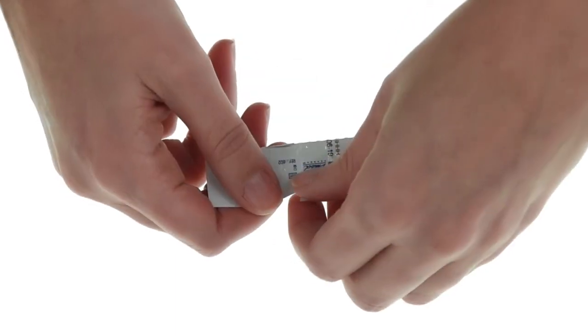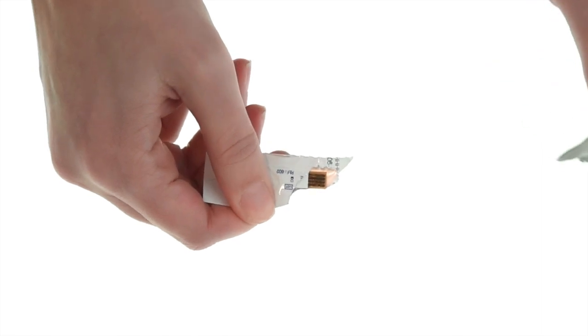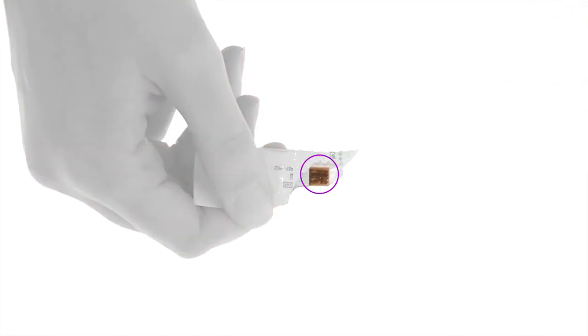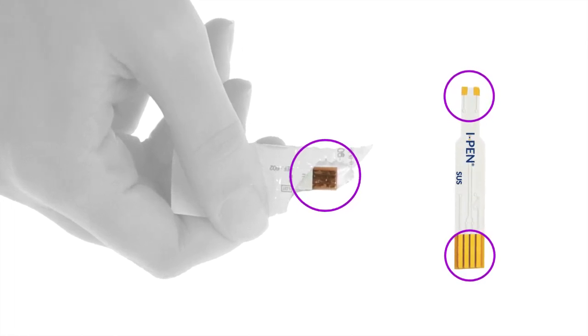Grasp the bottom of the package sensors firmly with one hand and carefully tear in the direction of the pre-cut section to expose the end of the sensor to be inserted into the iPen device. Do not touch the exposed gold electrodes on the tip of the sensor when inserting the sensor into the device.